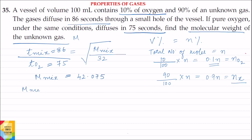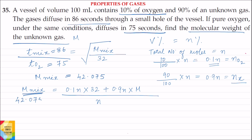The molecular mass of the mixture of gases is also equal to: moles of oxygen (0.1N) times molecular weight of oxygen (32), plus moles of the unknown gas (0.9N) times molecular weight of the unknown gas (M), all divided by total number of moles N. Setting this equal to 42.075 and solving, the value of M is equal to 43.2. That is, the molecular mass of the unknown gas is equal to 43.2.